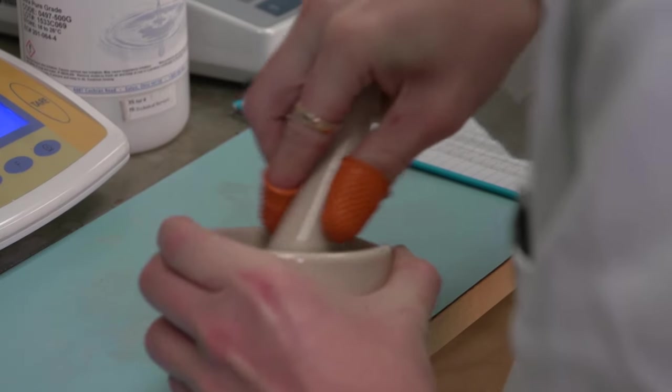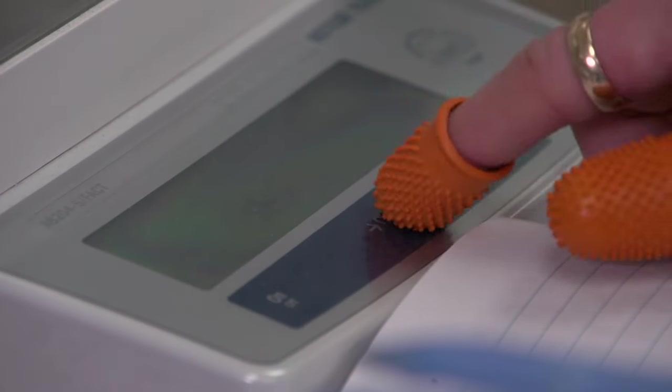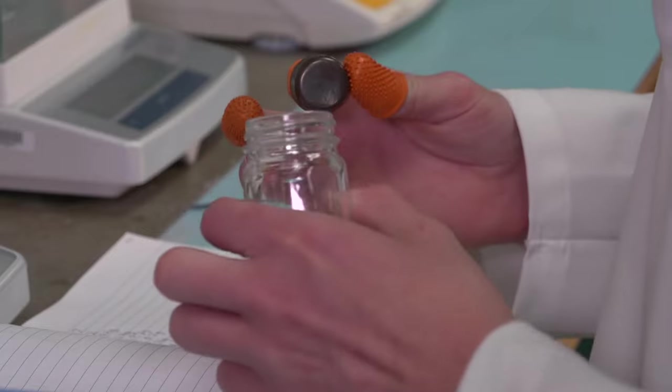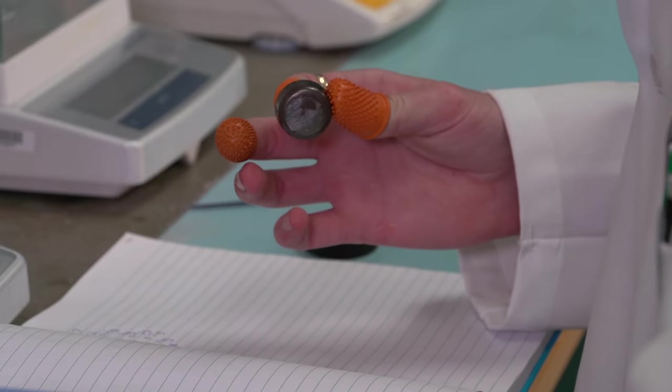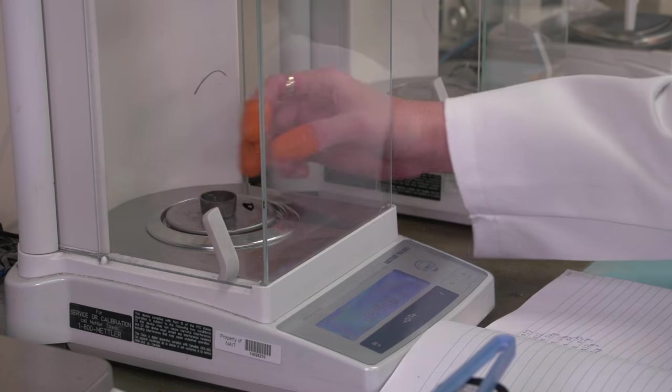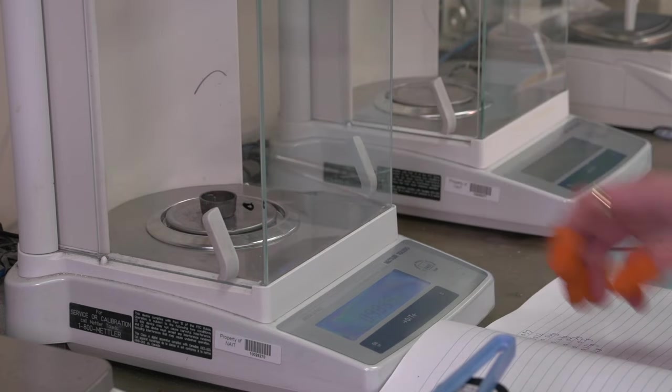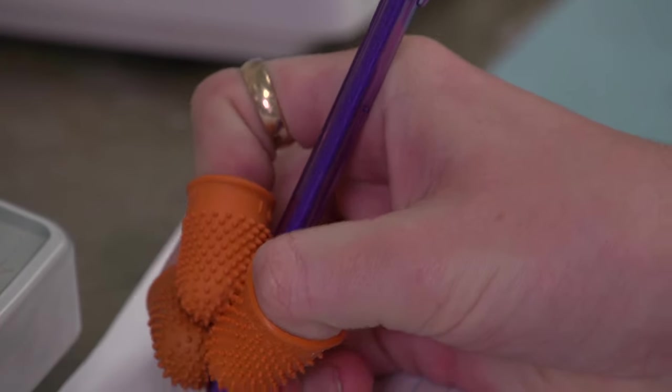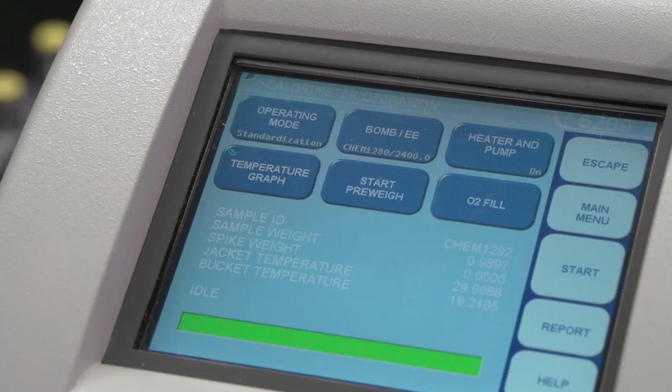Grind the sample in a mortar and pestle. On the analytical balance, weigh 0.5 grams of sample into the sample cup and record the mass to the nearest 0.1 milligram. Follow the same steps as for the standardization of the calorimeter. Be sure to set the calorimeter operation to determination using the operating mode button.